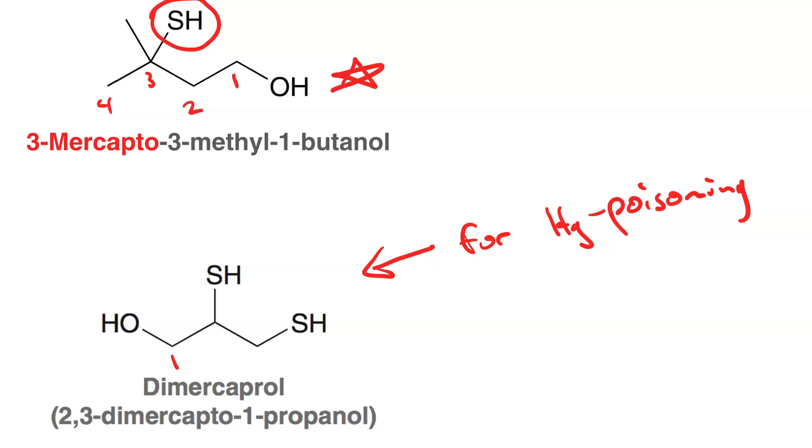And so if we number it, we give the alpha carbon to the hydroxyl the lowest number. And this is a mercapto group on carbon-2 and a mercapto group on carbon-3. So 2,3-dimercapto-1-propanol, dimercaprol for short.